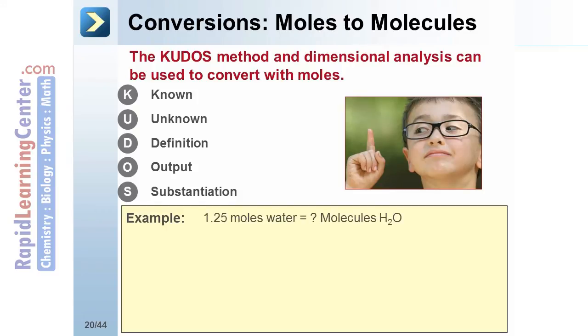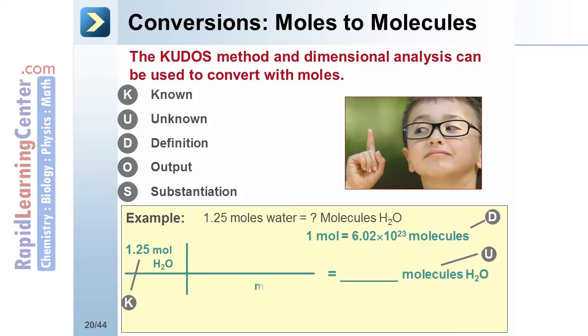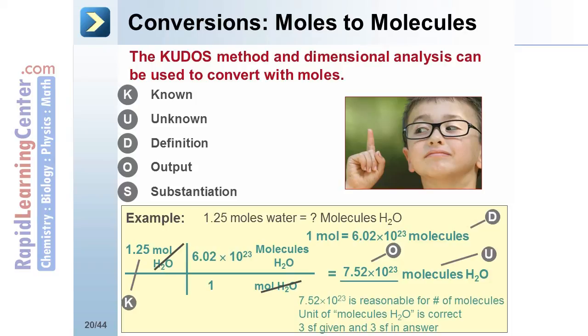For example, 1.25 moles of water is the same as how many molecules of water. Your known information. Identify your unknown information. Determine what definitions are necessary. Find the output. And substantiate. Check for reasonableness, correct units, and correct number of significant figures.